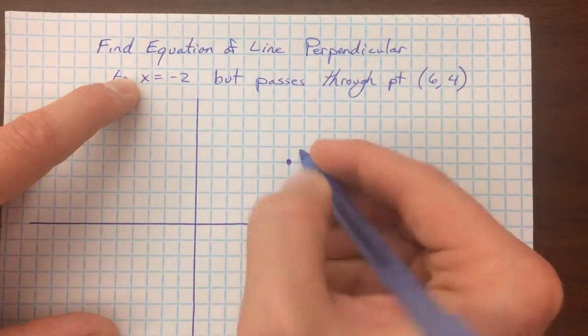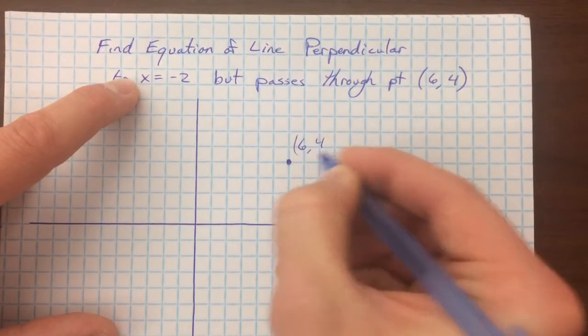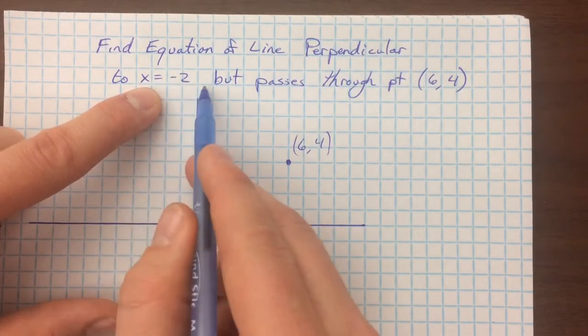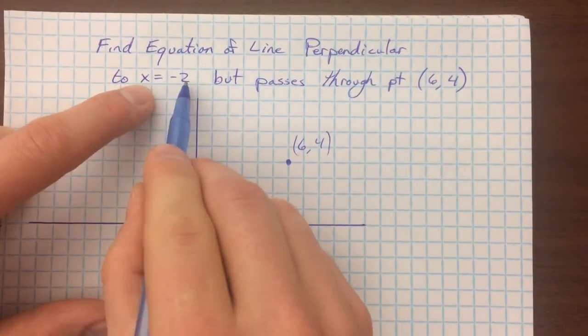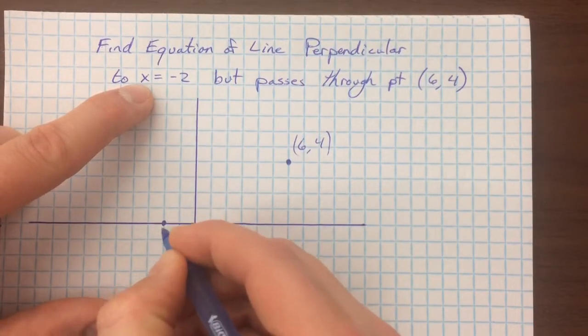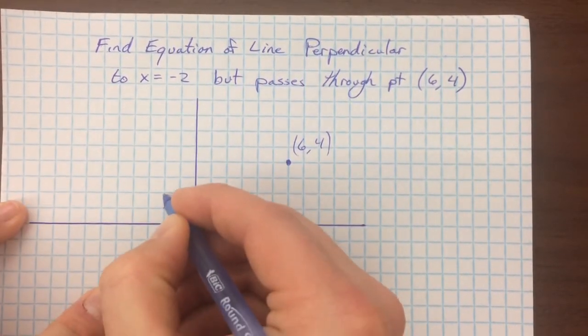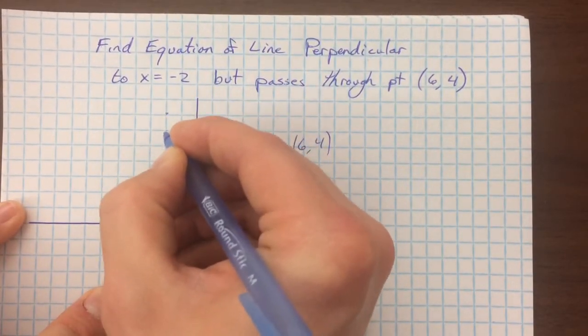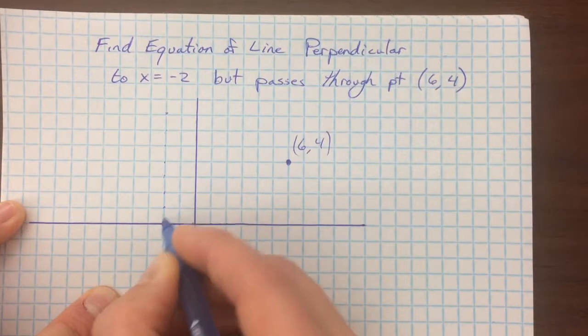This point right here is 6, 4, and we want it to be perpendicular to x equals negative 2. Now this is not your typical y equals mx plus b equation. All of the x values are negative 2, and so if I go over 2 on the x axis,